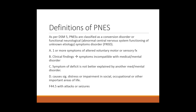This diagnosis requires a few criteria: A — one or more symptoms of altered voluntary motor or sensory functions; B — clinical findings where symptoms are incompatible with a recognized medical or mental disorder; C — symptom or deficit not better explained by another medical or mental disorder; and D — symptoms causing significant distress or impairment in social, occupational, or other important areas of life. They are typically coded F44.5, conversion disorder or FNST with attacks or seizures.